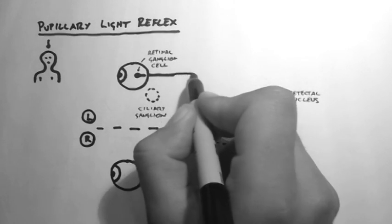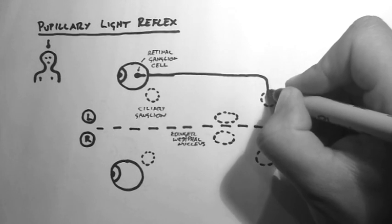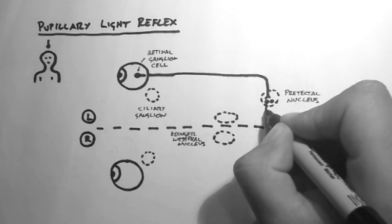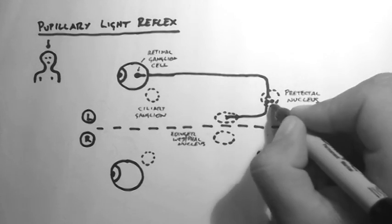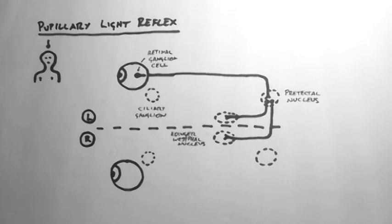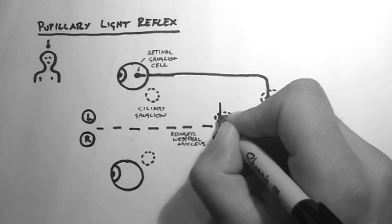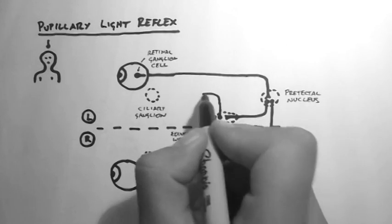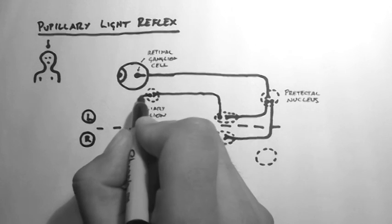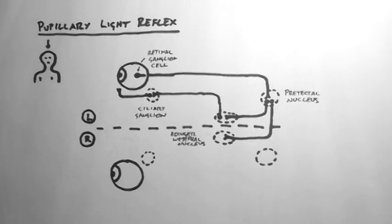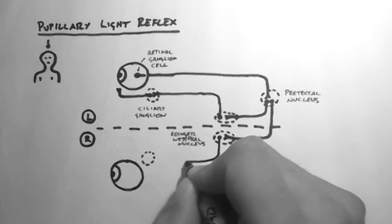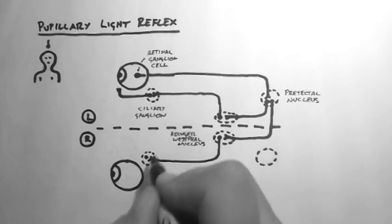So I'll draw all this up. Here's an axon going to the pre-tectal nucleus. And this innervates two outputs, one to the Eidinger-Westphal nucleus on each side of the brain stem. The cells in the Eidinger-Westphal nuclei project to the ciliary ganglia. The cell bodies in the ciliary ganglia then project to the muscles which contract the pupil.